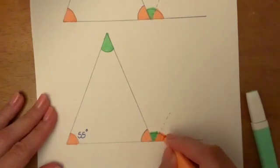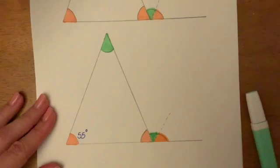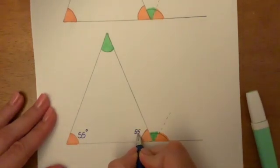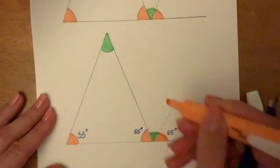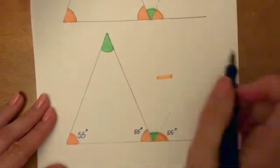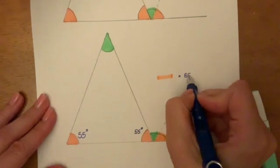So now I can start doing my labeling. First of all, I'm going to label what I already know on the diagram. I know that all the orange angles are 55, so this one's 55 and this one's 55. So the orange equals 55 degrees.